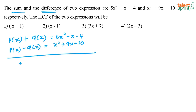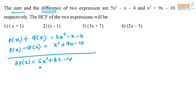What is P(x)? If I add these two expressions, the Q(x) terms will cancel and I will have 2 times P(x). Adding the sum and difference expressions gives 6x squared plus 8x minus 14, so P(x) is equal to 3x squared plus 4x minus 7.